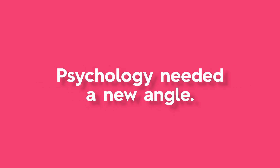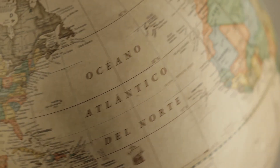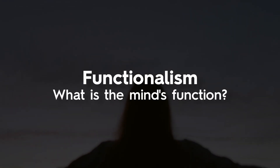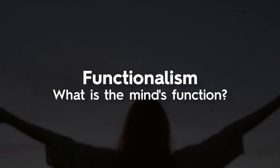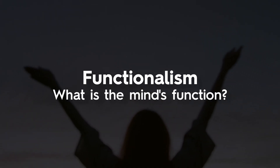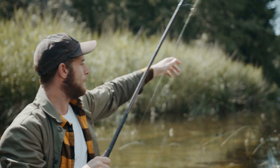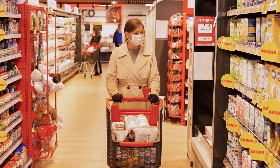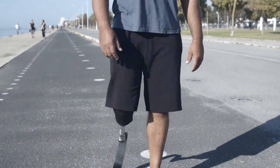Psychology needed a new angle. Across the Atlantic, Harvard professor William James asked a different question. Instead of the mind's parts, what is its function? James argued the mind evolved to help us adapt. This view became known as functionalism.